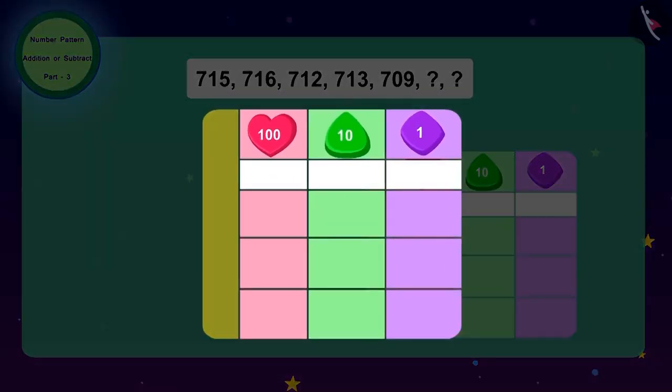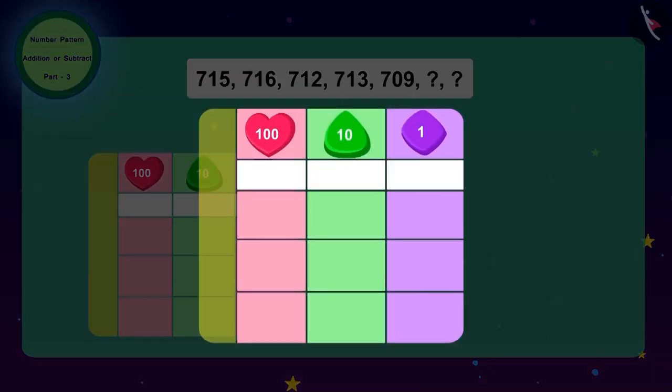Now let's look at the numbers after this. What do we have to do to get 713 from 712? We need to add one. And what do we have to do to go from 713 to 709? We will have to subtract four.